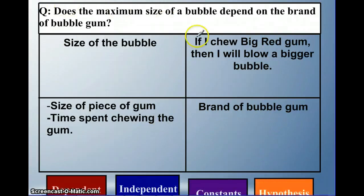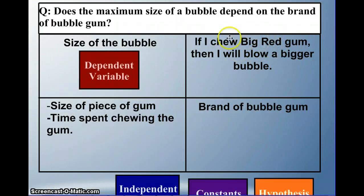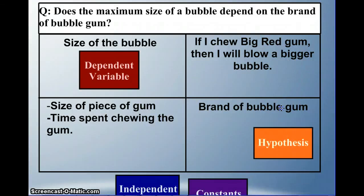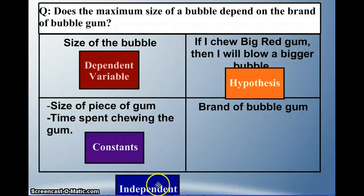Let's do one more. 'Does the maximum size of a bubble depend on the brand of the gum?' The size of the bubble — is that what we're changing or what we're measuring? Hopefully you said it's what we're measuring: that's the dependent variable. If I chew Big Red gum, then I'll blow a bigger bubble — that's a hypothesis. The size of the piece of gum and the time spent chewing have to remain the same; these are constants. The brand of the bubble gum is what we're changing — that's the independent variable.